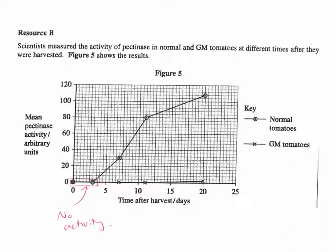So compare and contrast the two curves. Both have no activity for the first three days. After three days, the normal will have a lot more pectinase activity, whereas the GM only increases slightly after 12 days. So much higher pectinase activity in the normal after three days.